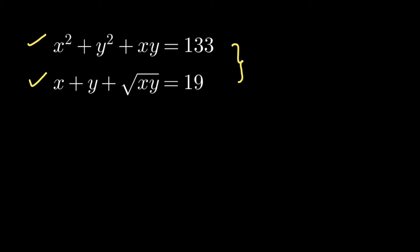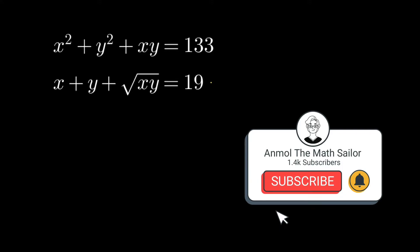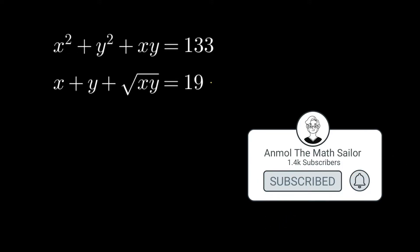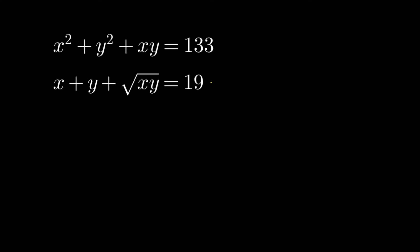Now let us see the solution and how we can solve this problem. The first thing I do is take the second equation and rewrite it by subtracting √(xy) from both sides. The left-hand side turns out to be x + y, and this equals 19 − √(xy).